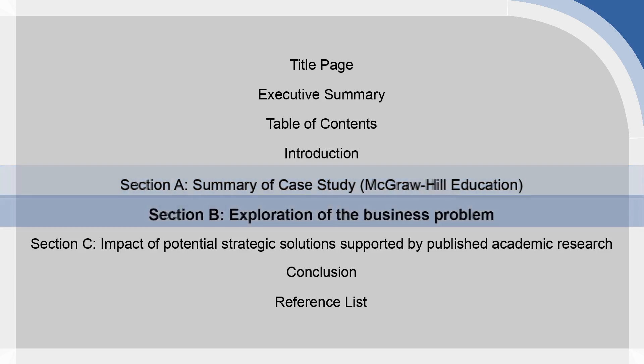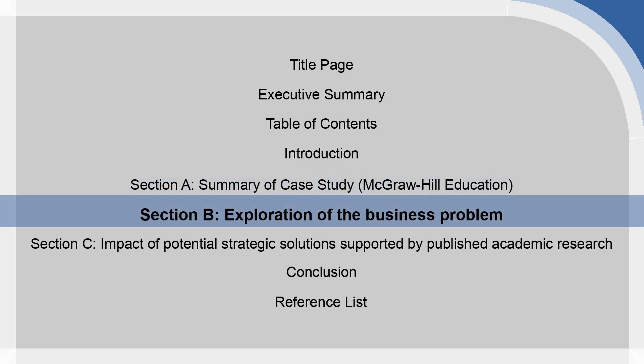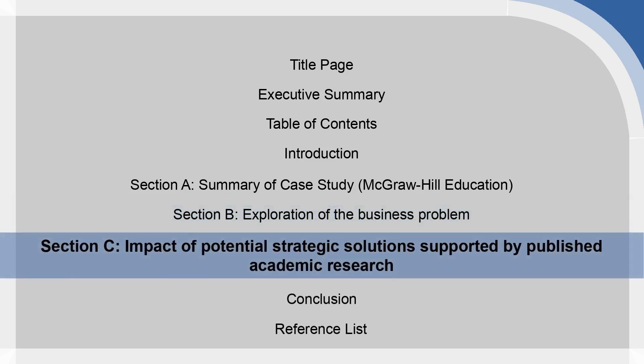Section B is your exploration of the business problem. This is where you bring in SWOT analysis, PESTEL, Porter's, or whatever tools you've used to identify and explore the business and its environment, and in your own words explore the actual issue you've identified. Section C then looks at the impact of potential strategic solutions, supported by published academic research — bringing in journal articles and academic textbooks to explore potential solutions to the business problem identified in Section B.